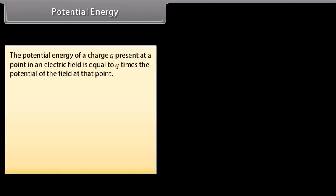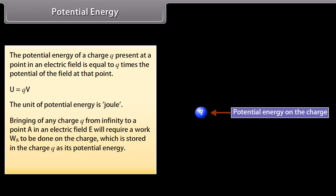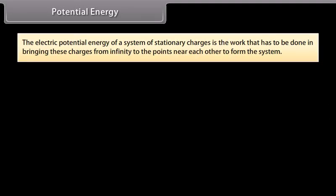Potential energy. The potential energy of a charge Q present at a point in an electric field is equal to Q times the potential of the field at that point: U equals QV. The unit of potential energy is joule. Bringing any charge Q from infinity to a point A in an electric field E requires work W_A to be done on the charge, which is stored as its potential energy: U_A equals QV_A. The electric potential energy of a system of stationary charges is the work that has to be done in bringing these charges from infinity to points near each other to form the system.